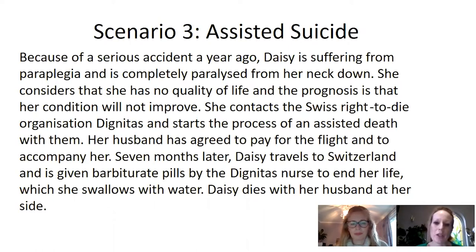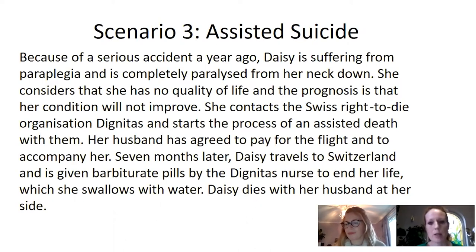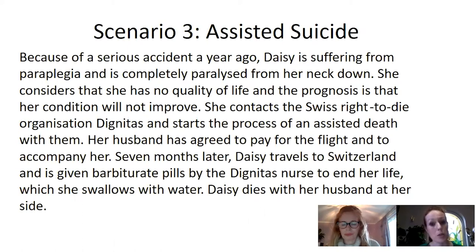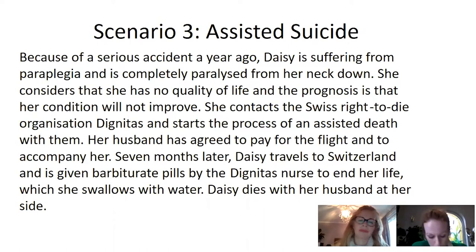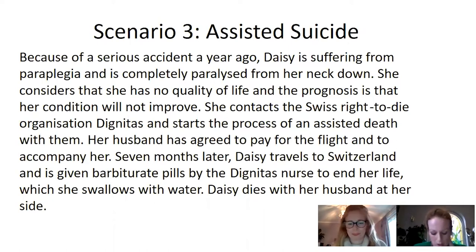What differentiates Daisy's situation from Jack's is the necessary involvement of somebody else besides the nurse — her husband. The scenario initially occurs in a country in which assisted suicide is unlawful, because she needs to travel abroad to obtain the assisted death that she wants. So this is an instance of nurse and relative assisted suicide.